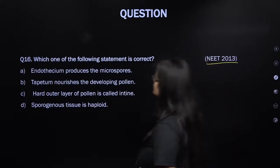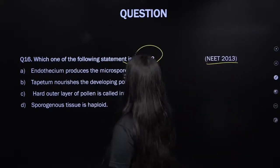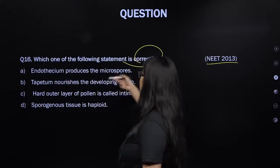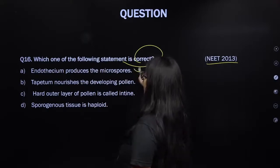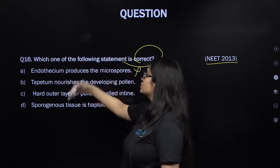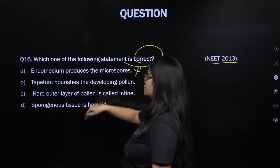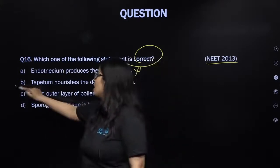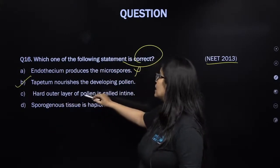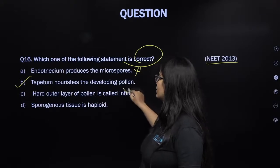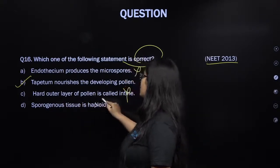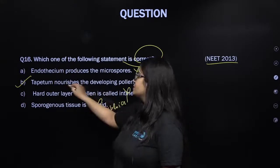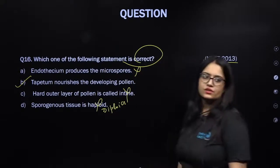From NEET 2013, which statement is correct? Endothecium produces microspores — no, that is the sporogenous tissue. Tapetum nourishes the developing pollen — that is correct. Hard outer layer of pollen grain is called intine — no, it is called exine. Sporogenous tissue is haploid — no, it is diploid. So the only correct answer is B: tapetum nourishes the pollen grain; tapetum is nutritive in nature.